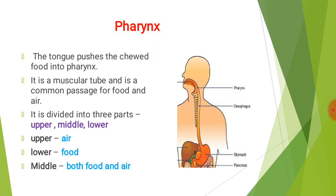The mouth cavity leads into the pharynx. The tongue pushes the chewed food into the pharynx. It is a muscular tube and is a common passage for food and air. This muscular tube is divided into three parts: upper, middle, and lower. The upper part allows air to pass through it, the lower part allows food to pass through it, and the middle part is for both food and air.